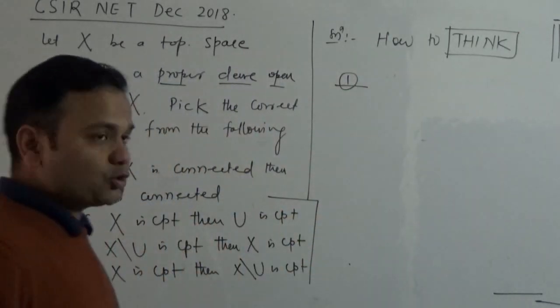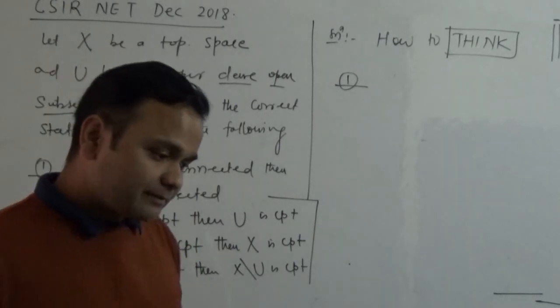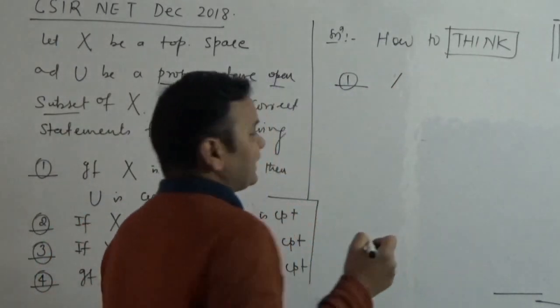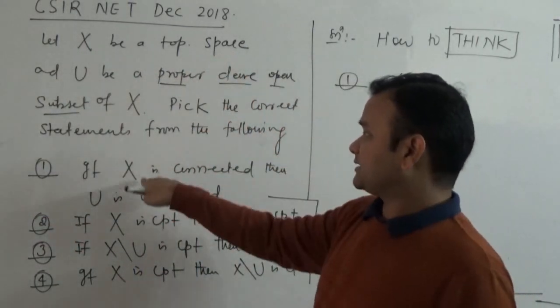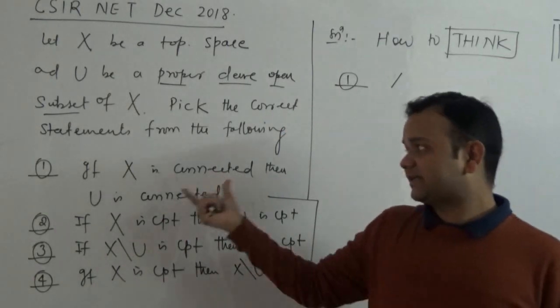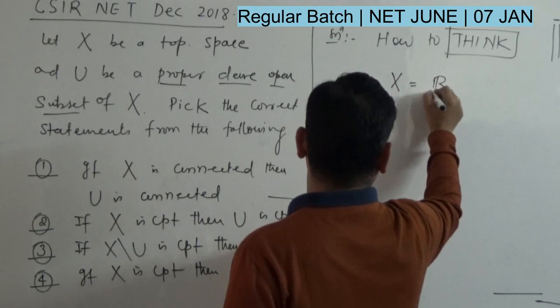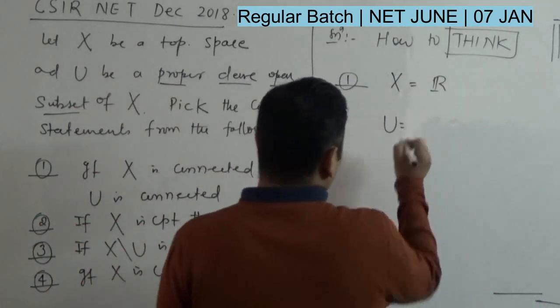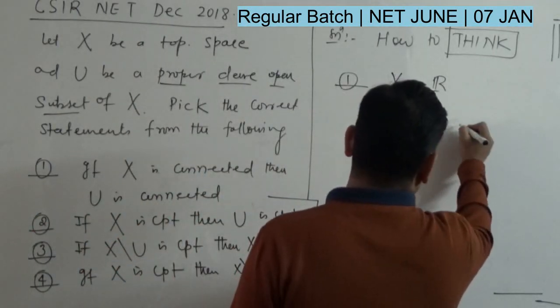What is it? If X is connected then U is connected. If X is connected then U is connected, does it imply U is connected? Not necessarily. So if X is connected as a topological space, then is U connected? Not necessarily.